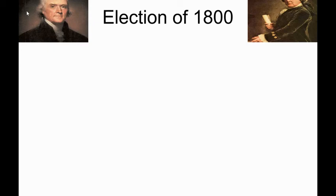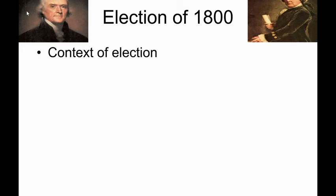The election of 1800 was very contentious. By this time, the gloves were off between not only Hamilton and Madison and Jefferson, but really between Adams and Jefferson, who had been friends and allies during the Revolutionary War but were now pretty much enemies. Most of the scandalous mudslinging was done by underlings — for example, the Federalists found out about Jefferson's affair with one of his slaves, Sally Hemings, with whom he had several children, and that information got out to the public as an attempt to smear him.